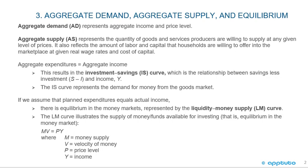If we assume that planned expenditures equals actual income, there is equilibrium in the money markets represented by the liquidity money supply, which is the LM curve. The LM curve illustrates the supply of money funds available for investing — that is equilibrium in the money market.